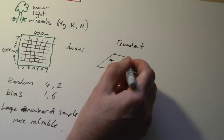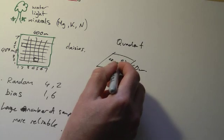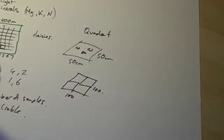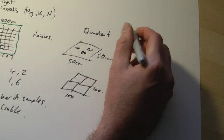And all you do is you count how many of the various plants there are inside of your quadrat. Another way they're sometimes used is to work out a percentage cover.